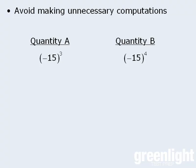For example, in this question, we need only recognize that since we have a negative number raised to an odd power in quantity A, the result must be a negative number. And since we have a negative number raised to an even power in quantity B, the result here must be a positive number. Since a positive number is always greater than a negative number, the correct answer is B. Notice that we were able to reach this conclusion without performing any lengthy calculations.